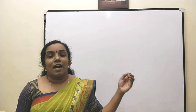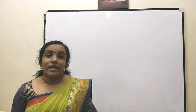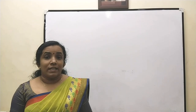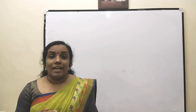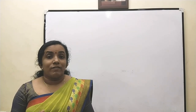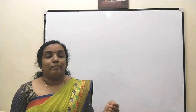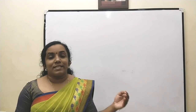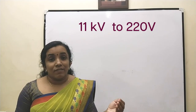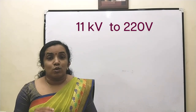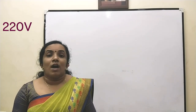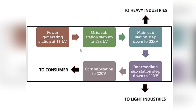City substations are the places where we receive electricity. However, 11 kV cannot be withstood by our home appliances, so at the city substation this 11 kV is reduced to 220 volts and sent to household consumers. This is how power generated at the generating station reaches our homes.